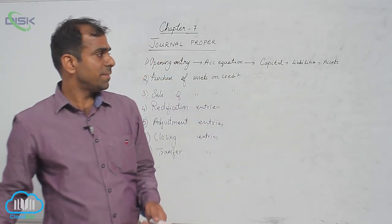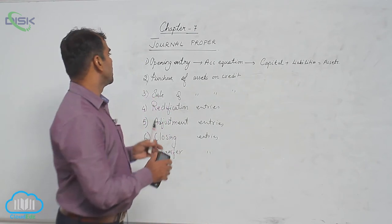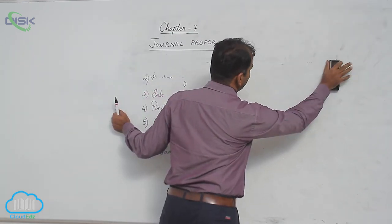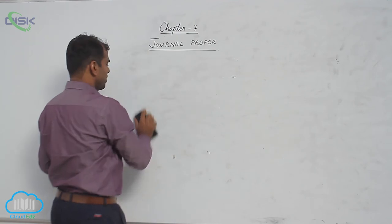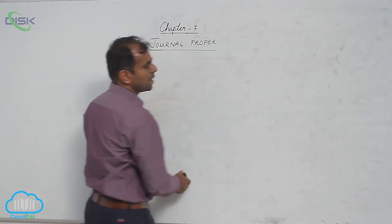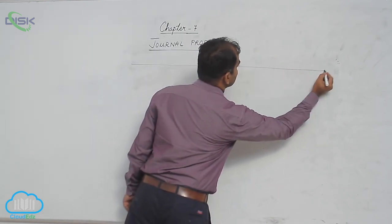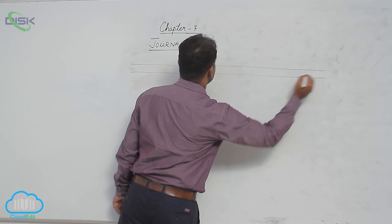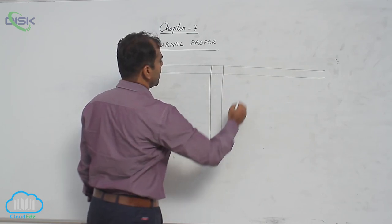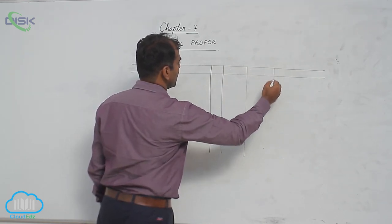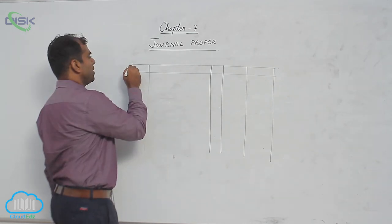Moving on, we will discuss what is an opening entry and the other entries, and what is the format of your journal proper. The format of journal proper is nothing but that of a simple journal. As usual, you have your date column, your particulars column, your ledger folio column, and your two amount columns — a debit amount column and a credit amount column.